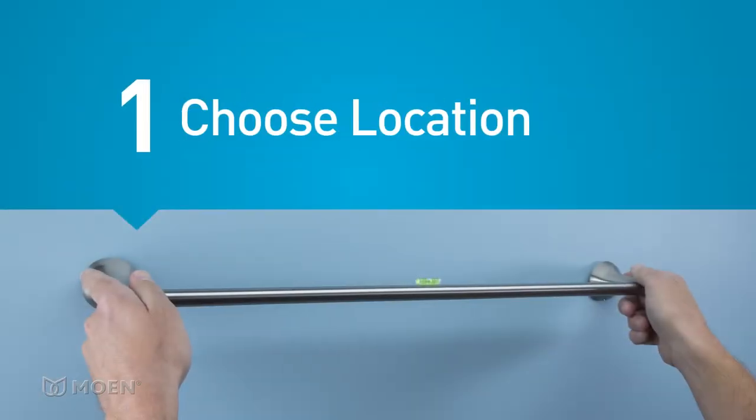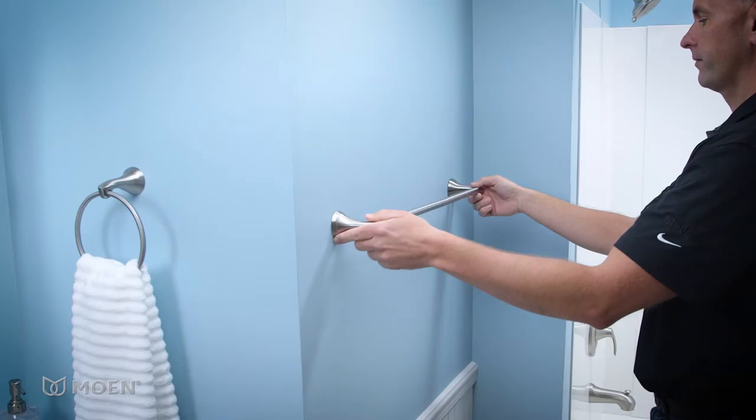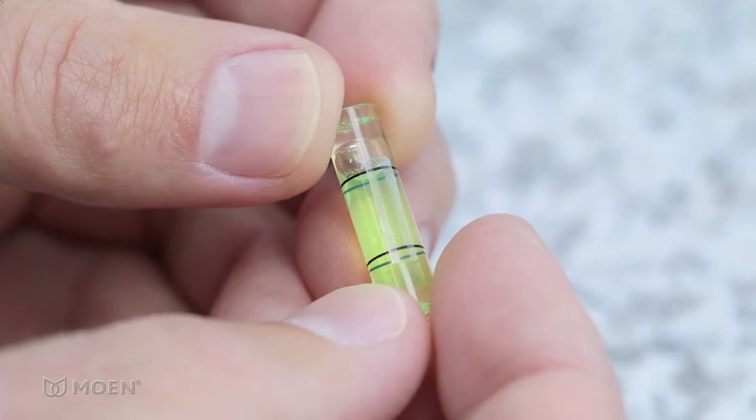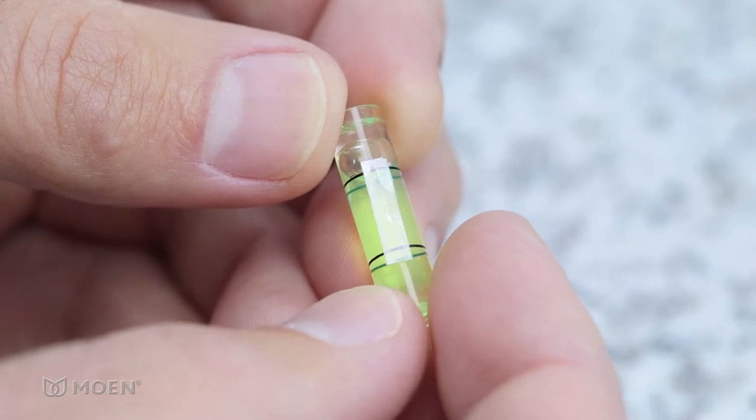Step 1: Choose location. Simply determine where you want to install the towel bar on the wall. A self-adhesive level is included with all two-post bathroom accessories, such as the towel bar.